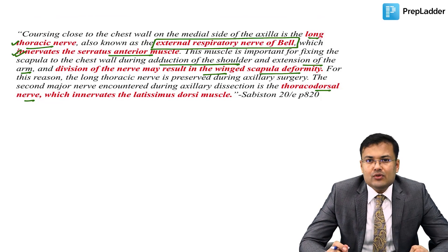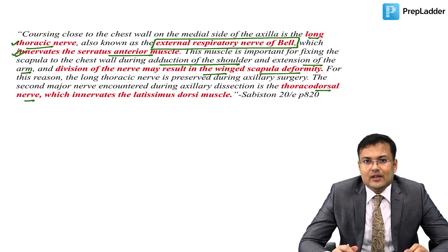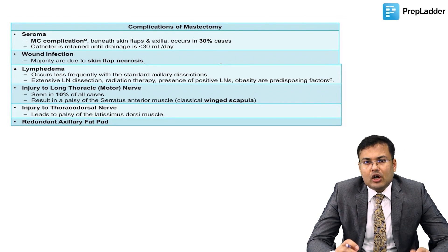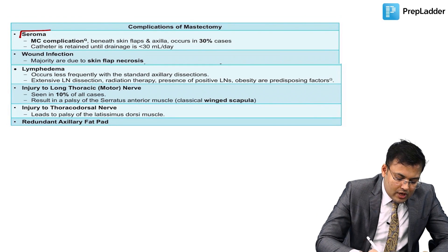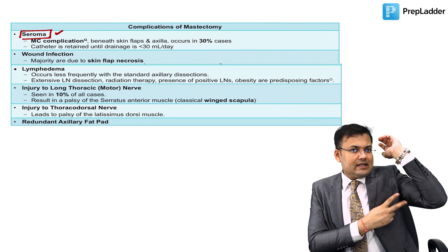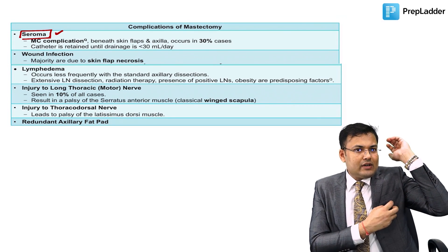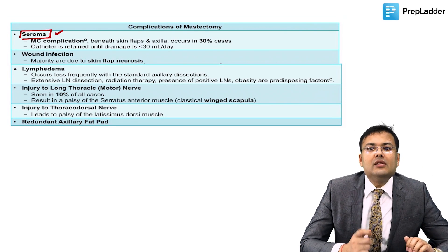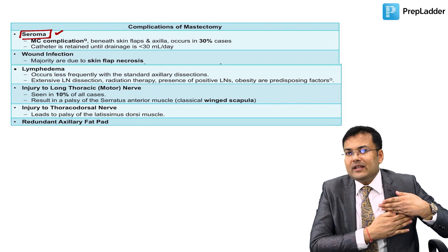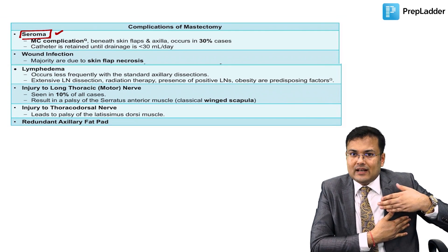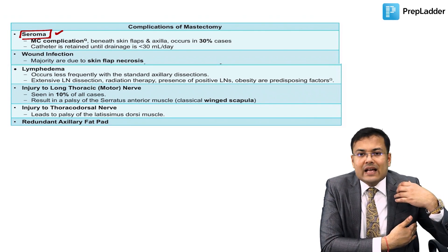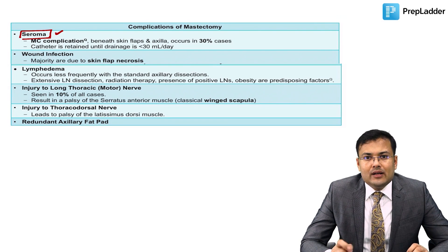The second nerve injured is the thoracodorsal nerve, which innervates latissimus dorsi. Many questions are asked about complications of mastectomy. The most common complication is seroma: when lymphatics and lymph nodes are dissected, there is injury to lymphatics, causing collection of serous material beneath the flap and in the axilla.